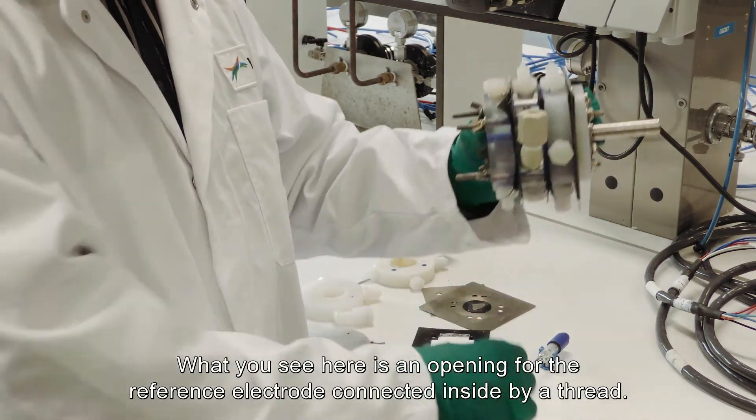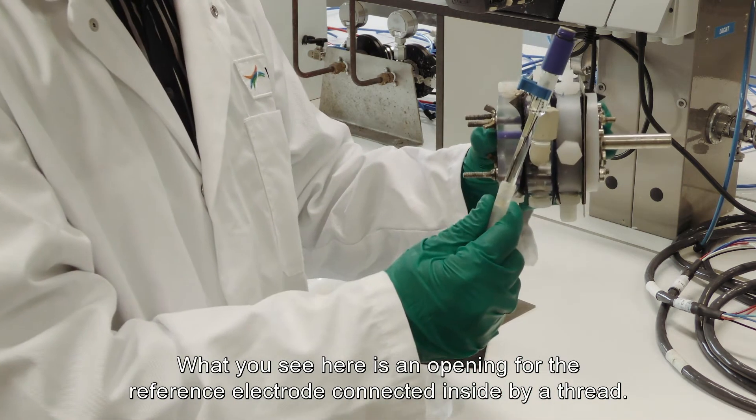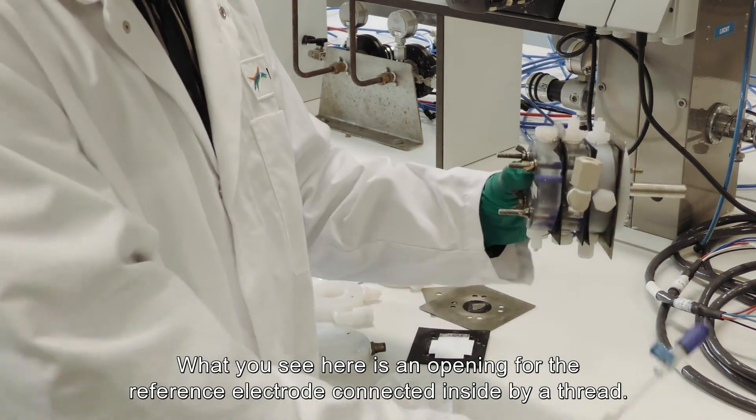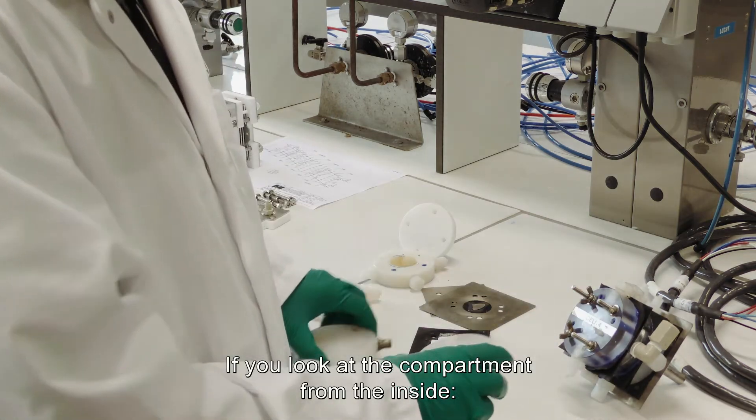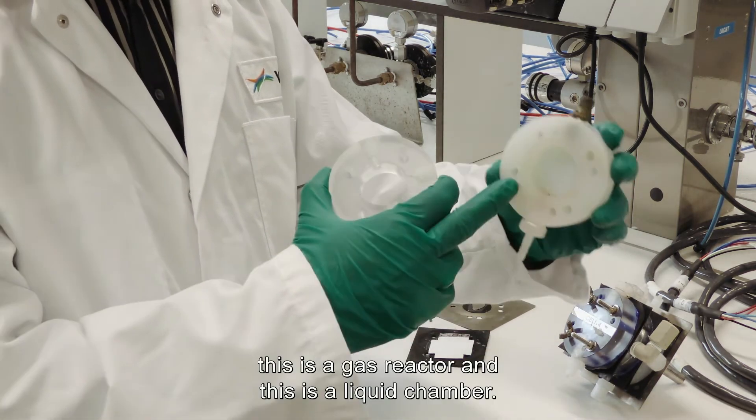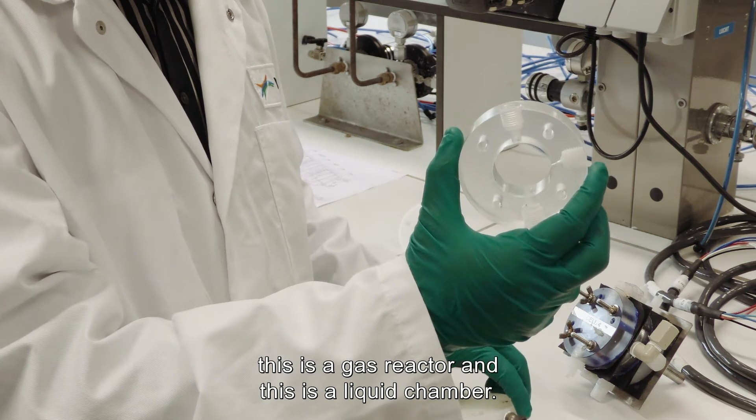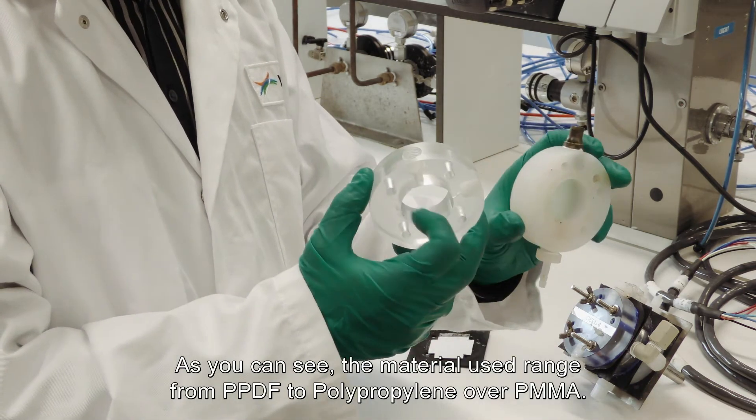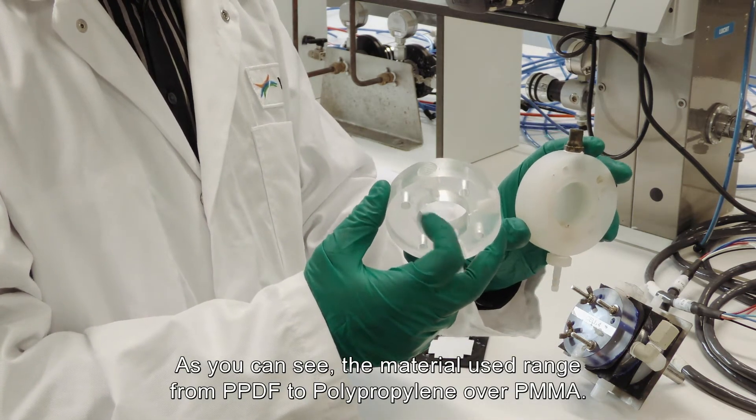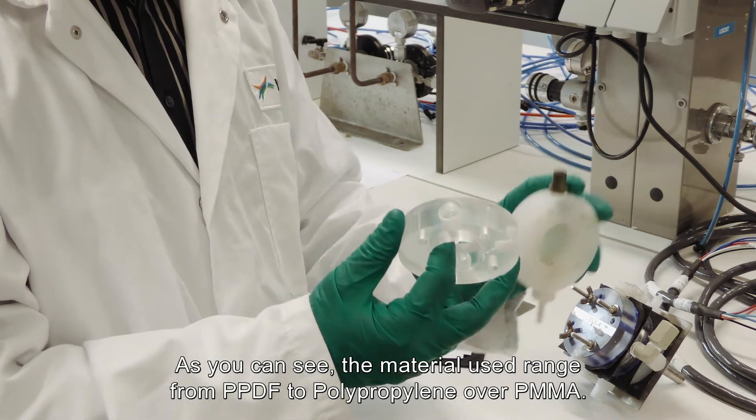What you see here is an opening for the reference electrode which is then connected inside by a thread. If you look at the compartment from inside, this is a gas reactor, this is a liquid chamber, and as you can see the material used can be ranging from PVDF to polypropylene and PMMA.